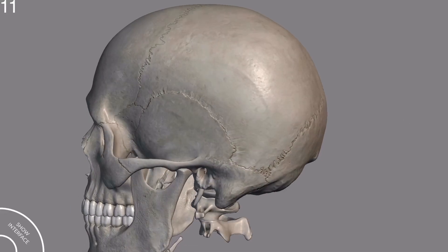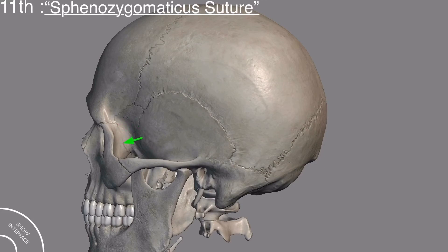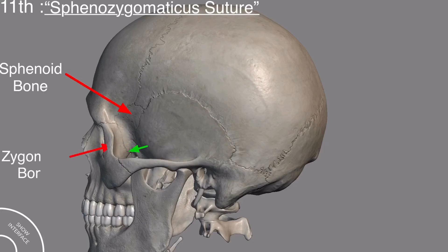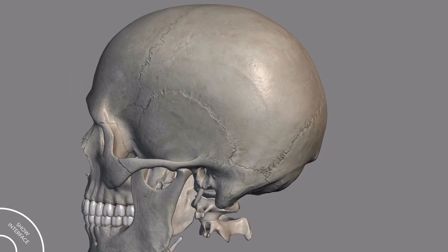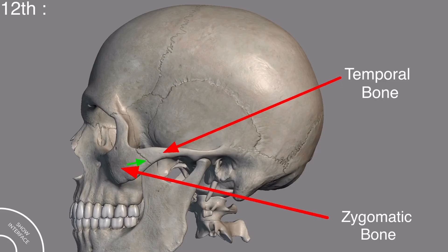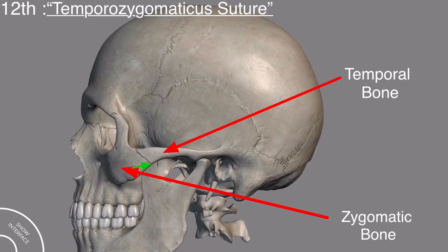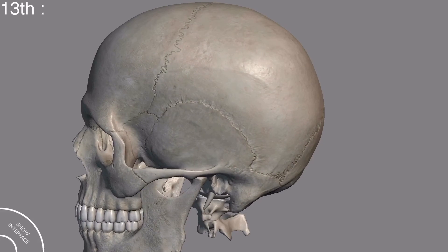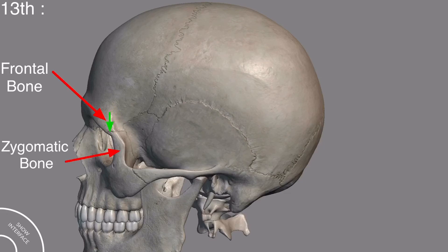The next suture is the sphenozygomatic suture, present between the sphenoid bone and the zygomatic bone. The suture present between the temporal bone and the zygomatic bone is called the temporozygomatic suture. The suture present between the frontal bone and the zygomatic bone is called the frontozygomatic suture.